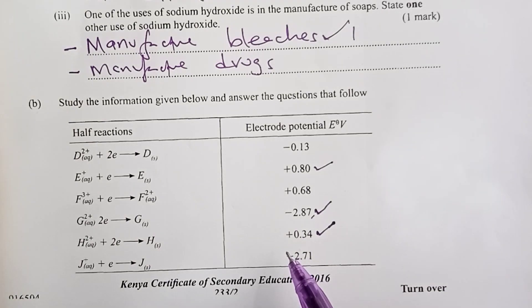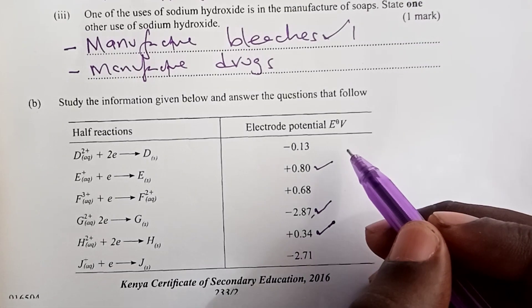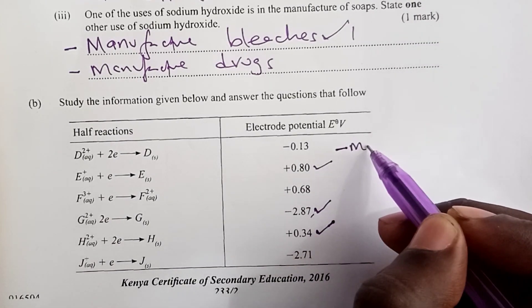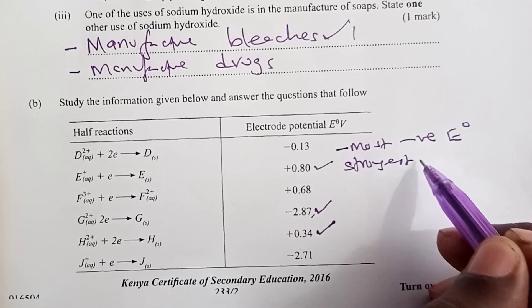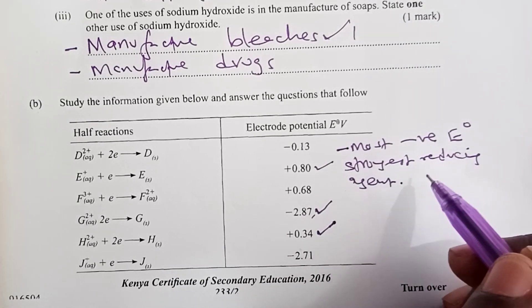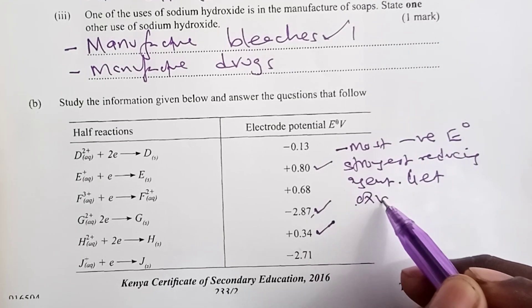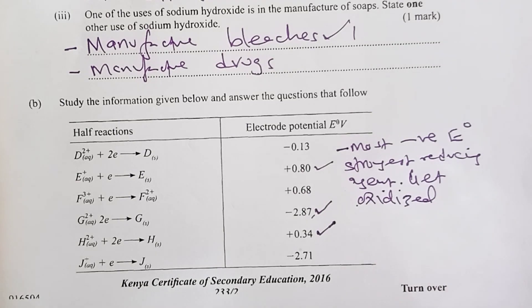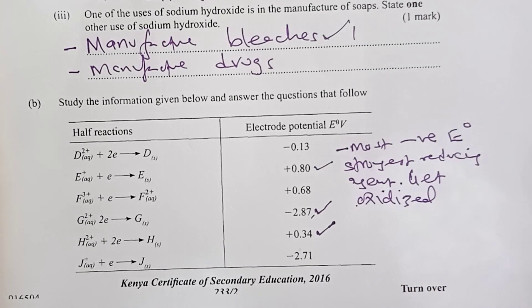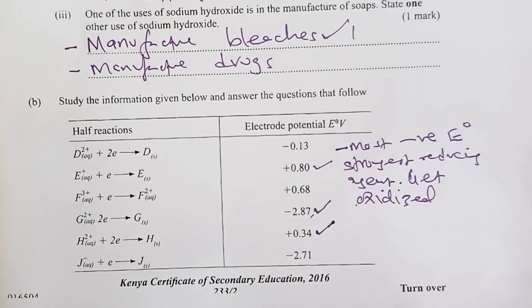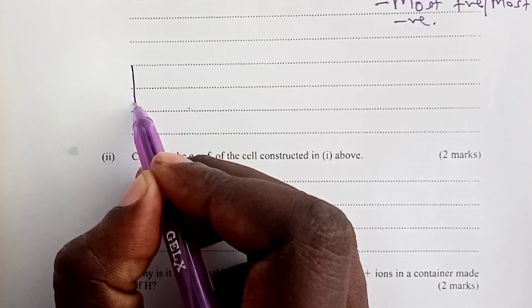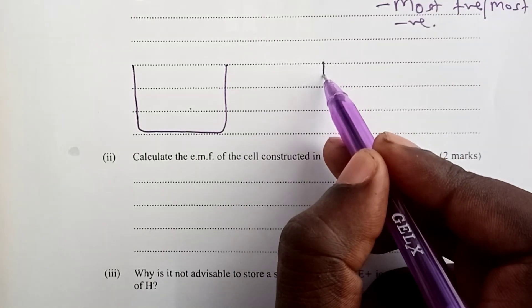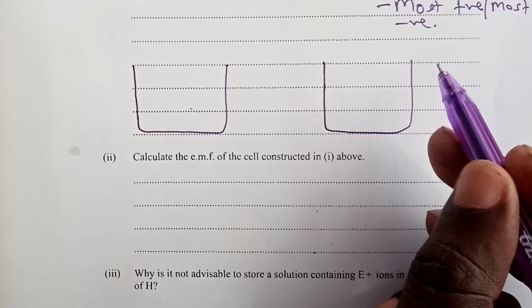So, between E and G, which one should we put on the left-hand side? And here, we normally say that the half reaction with the most negative E naught value is normally the strongest reducing agent. Being a reducing agent, it will get oxidized. And for that matter, we shall put G on the left-hand side because the rule states that the half cell where oxidation takes place must be the one that we start drawing. So, for our question, we would draw the half cell of G on the left and the half cell of E where reduction would take place on the right.